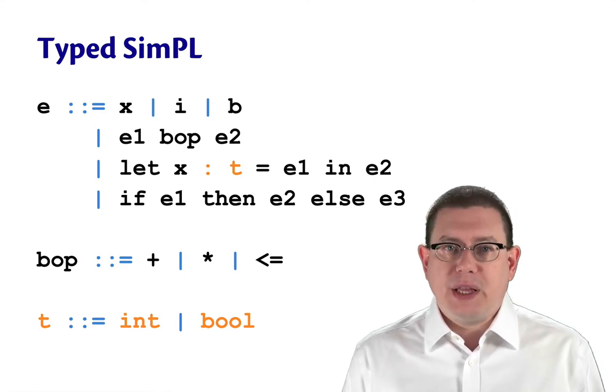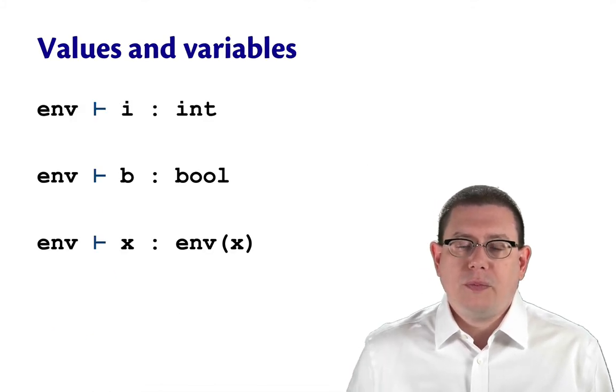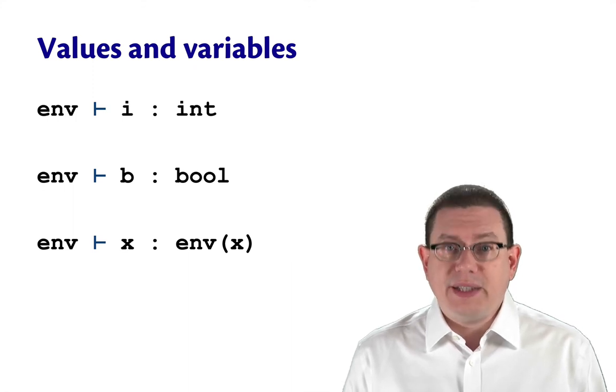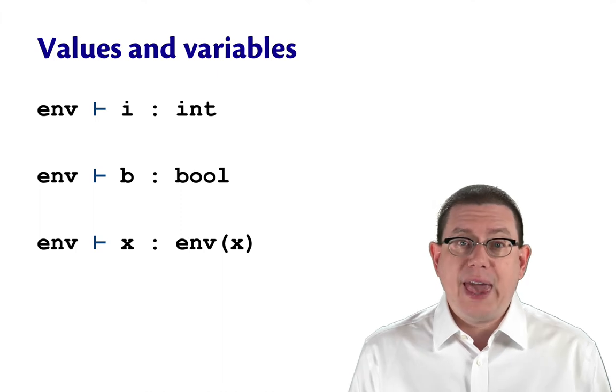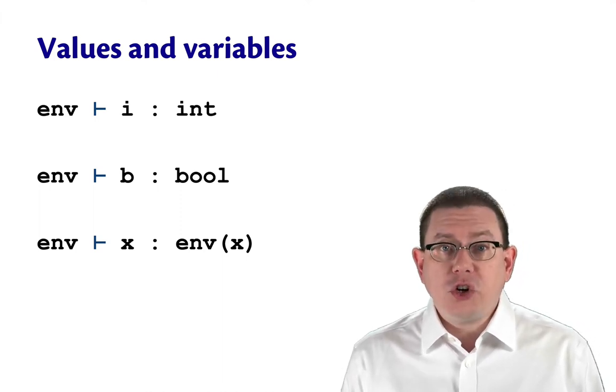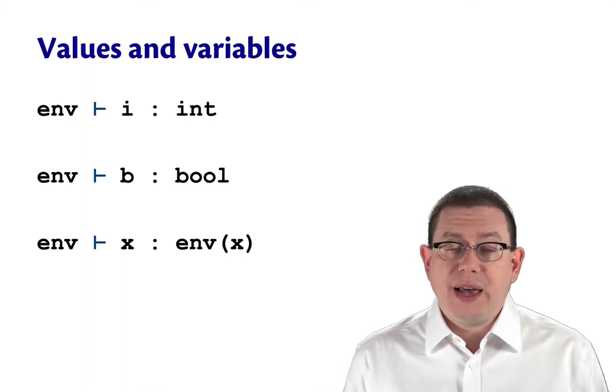There's only two types in this language, int and bool. Type checking of values and variables is quite easy. No matter what the static environment is, let's just call it env, it's always going to show that an integer constant has type int, and that a boolean constant has type bool.